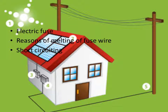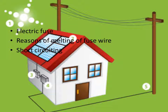Short circuiting occurs when positive and negative wires directly come into contact, causing a large amount of current to suddenly flow in the circuit. This can cause wires to overheat and catch fire, damaging life and property. When electrical devices are connected to a single socket, excessive current causes overload. To prevent this, a fuse made of an alloy with a low melting point is included in the circuit. When current exceeds the safe limit, the wire melts, breaking the circuit. After correcting the fault, the broken fuse can be replaced.